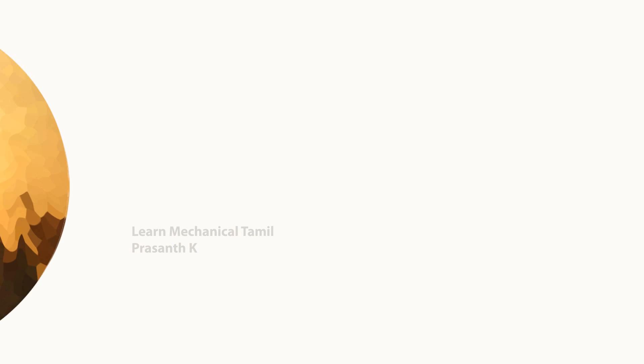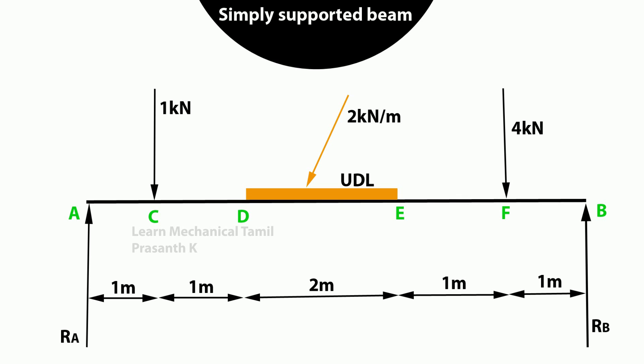Okay guys, let's look at this problem. Looking at a line — this is a simply supported beam. There is a 4 kN point load. There is also a uniform distributed load — 2 kN per meter over 2 meters. Given the 4 kN load, what is the shear force and bending moment at various sections? We need to find the shear force and bending moment values.